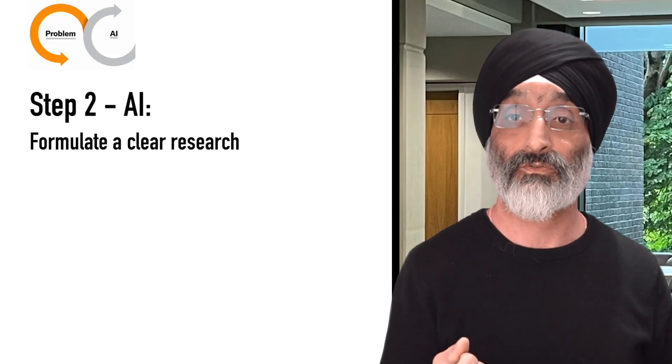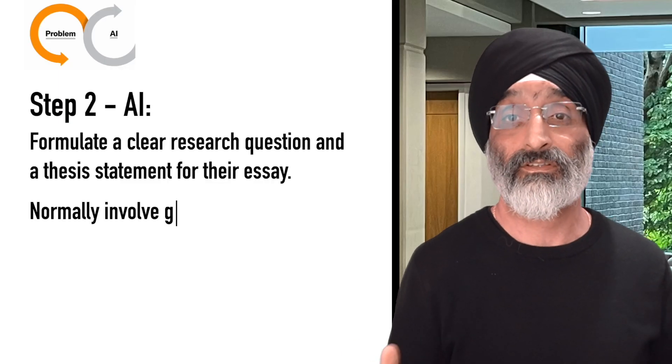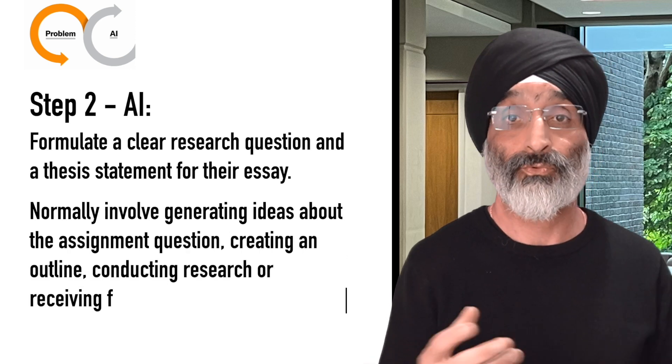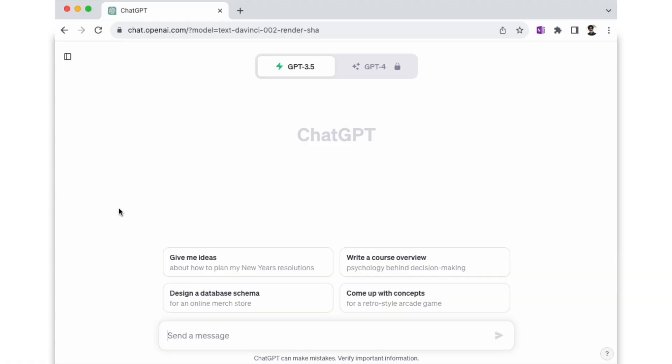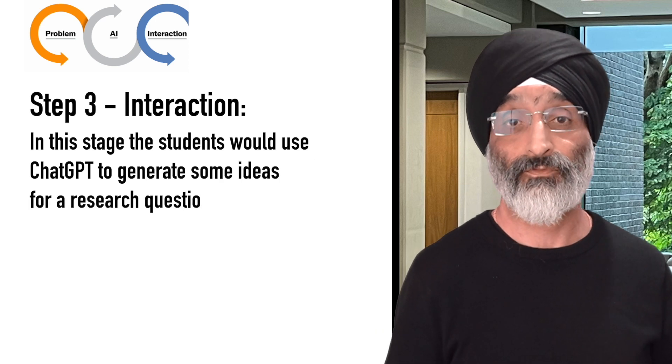In the second step — AI tool selection — once the group have completed the first step, I'd ask them to use the PEAR framework to formulate a clear research question and thesis statement for their essay. I'd provide them with a list of generative AI tools that could help them with tasks related to their essay preparation and writing process, which would normally involve generating ideas, creating an outline, conducting research or receiving feedback. I'd encourage the students to work together to make notes on the AI tools they've explored, chosen or discarded, along with brief justifications for their choices. Let's assume that they've chosen to use ChatGPT, as it is one of the most popular generative AI tools for text generation.